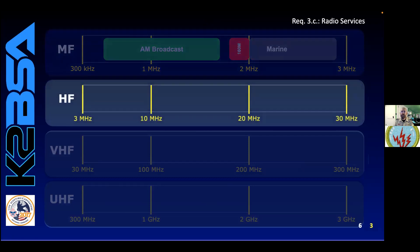Next comes the high frequency, or HF band, as radio operators call them. There's a lot we're not showing here, but ham radio has lots of bands throughout this range. Each of the ham radio segments is identified by their approximate wavelengths. How many of you have heard of CB radio? It used to be very popular, but now it's pretty much used by truckers out on the highway. For now, that's as far as we'll go with the high frequency group.